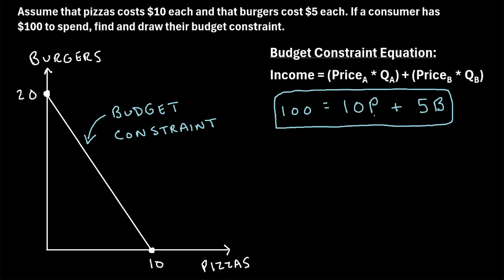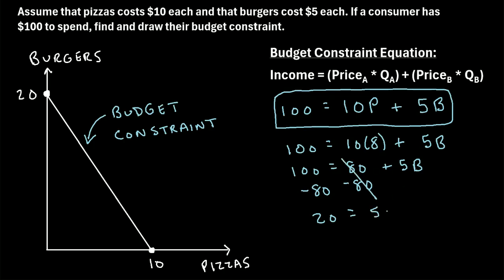This equation lets us plug in a quantity for either pizzas or burgers and solve for the other. For example, if we want to buy 8 pizzas, we plug in P = 8: 100 = 10(8) + 5B, which simplifies to 100 = 80 + 5B. Subtracting 80 from both sides gives 20 = 5B, and dividing by 5 gives B = 4. So if we buy 8 pizzas, we can also buy 4 burgers.